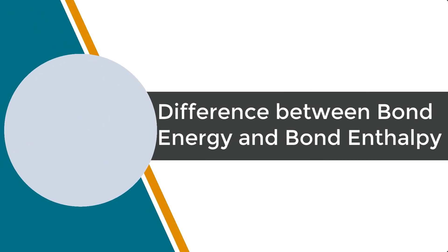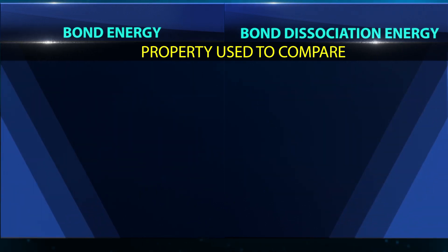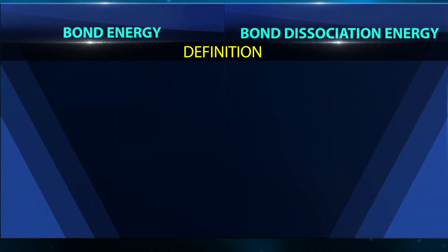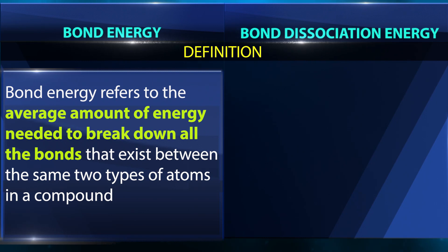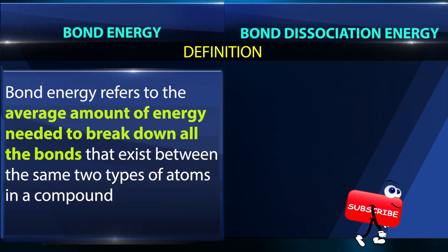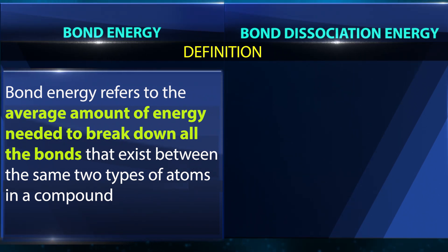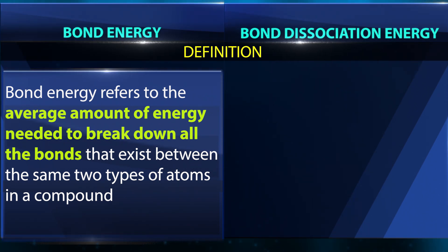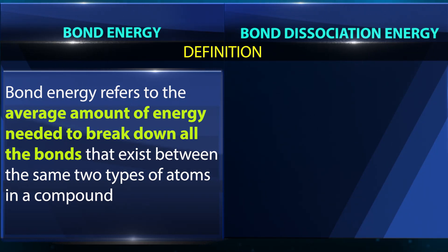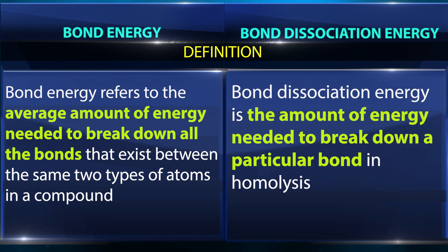The difference between bond energy and bond dissociation energy. Bond energy refers to the average amount of energy needed to break down all the bonds that exist between the same two types of atoms in a compound. Bond dissociation energy is the amount of energy needed to break down a particular bond in homolysis.